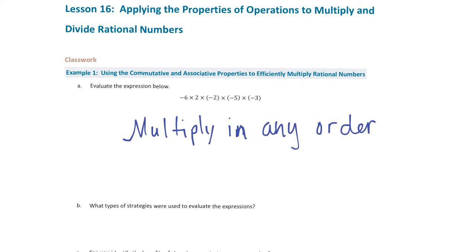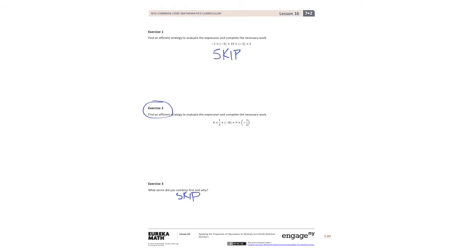Lesson 16 in module 2. The first problem is just reviewing the commutative and associative properties. When you look at this particular problem, you can choose any order you want to multiply the numbers. In multiplication, you can switch up the order and still get the same answer. Just a reminder: when everything is multiplication, or if everything is addition, you can switch the order around and add them up in any order you want.